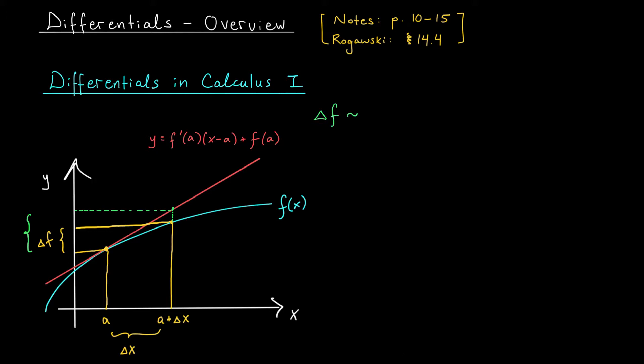That is, we can compute this quantity here. That quantity is the height of the tangent line at a plus delta x: f'(a) times (a plus delta x minus a) plus f(a). Then we subtract off the value of the tangent line at a, which is simply f(a). If you clean this up, you find the approximate change in the height of your function is f'(a) delta x.